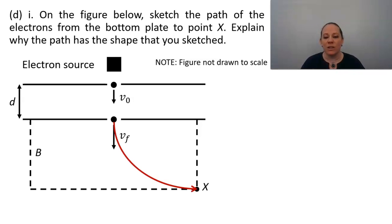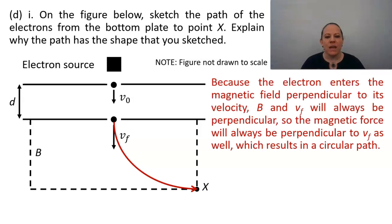So our path is going to look like this, curving down to the right from the point where the electron emerges from the plate to point X. And because the electron enters the magnetic field perpendicular to its velocity, B and VF will always be perpendicular. So the magnetic force will always be perpendicular to V final as well, which results in a circular path.